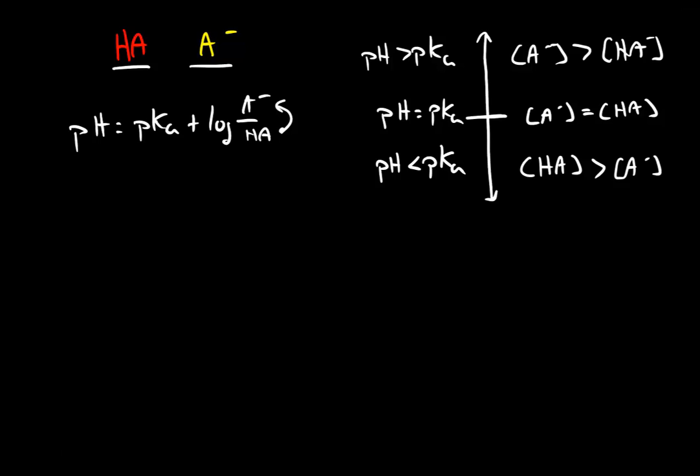So we have this continuum where the relationship between the pH and the pKa is related to the relationship between the weak acid and the conjugate base. This is how we're going to approach the concept of speciation. Speciation is the idea that if we have a molecule, like our weak acid, we can develop conditions that force this molecule to convert into a different form or a different chemical species.